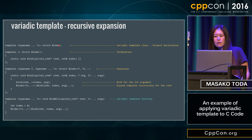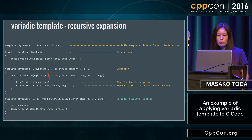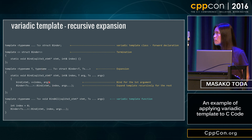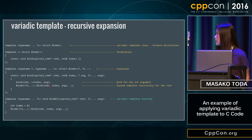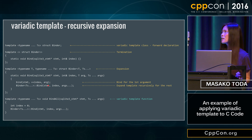So with variadic template, here is one way to implement it. This is the forward declaration, this is the termination, and this is the expansion part. Inside there, call the bind function for the first argument, and expand the template recursively for the rest of the arguments. It works well, and I was happy.